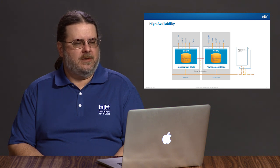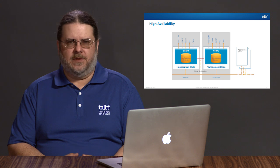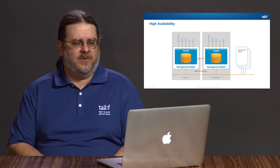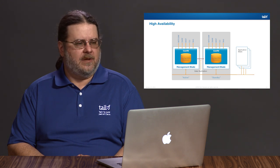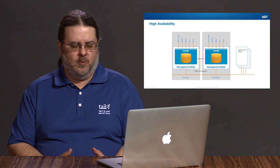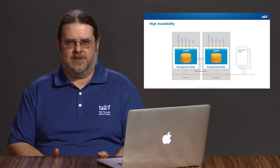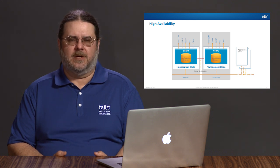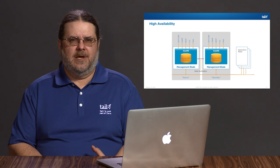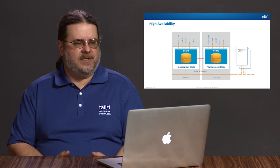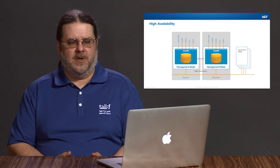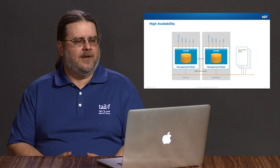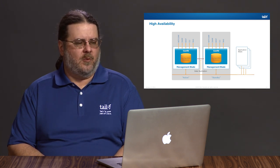The synchronization check occurs when a new standby ConfD attaches to an active. First, a check is done that the standby is running the same version of ConfD and the same version of data models. Then a simple check of what's called the transaction ID from the CDB database is done. If the transaction IDs from both databases are equal, we know we're in sync and proceed. If they're not equal, the synchronization process occurs — moving data contents from the active database to the standby, queuing up any transaction changes that may occur along the way.